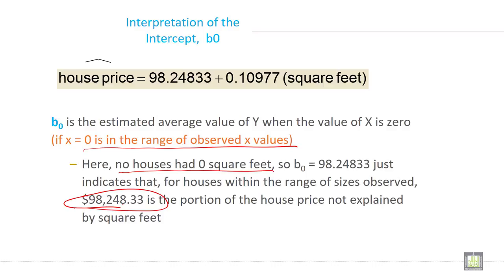It means the price of house will depend on other factors than the square feet because this is an independent value. The price explained by square feet is separate from this constant value. This is independent of square feet. This is the interpretation of this regression equation.